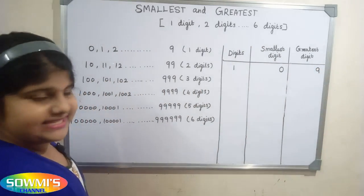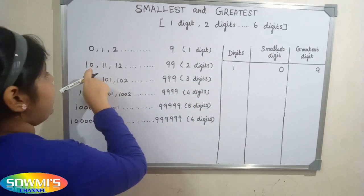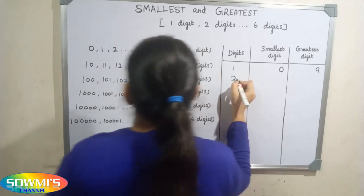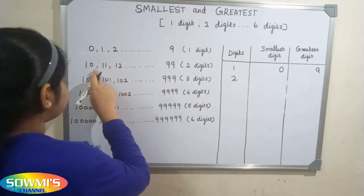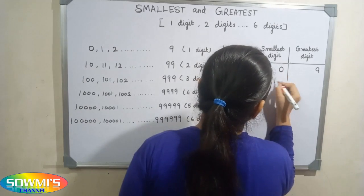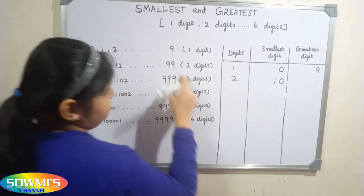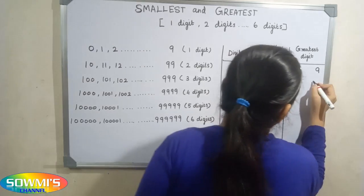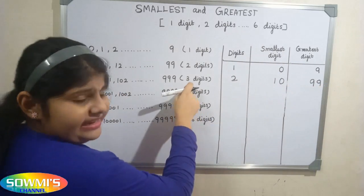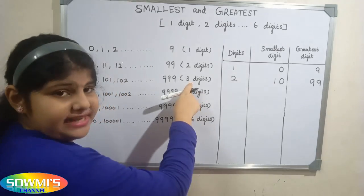Next we will see two digit number. Two digit number starts with 10 and ends in 99. So the smallest two digit number is ten and the greatest two digit number is 99.